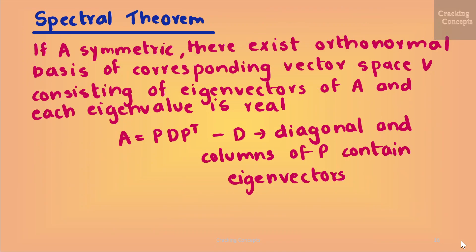Now we will look into the spectral theorem. If A is symmetric, there exists an orthonormal basis of the corresponding vector space V consisting of eigenvectors of A, and each eigenvalue is real. A direct implication of the spectral theorem is that the eigendecomposition of a symmetric matrix A exists with real eigenvalues, and we can find an orthonormal basis of eigenvectors so that A can be written as PDP^T, where D is diagonal and the columns of P contain the eigenvectors.